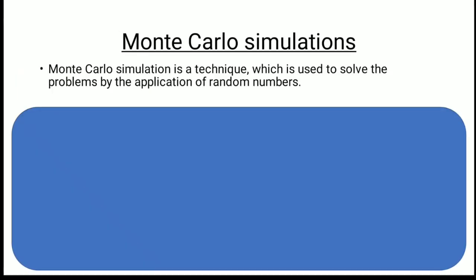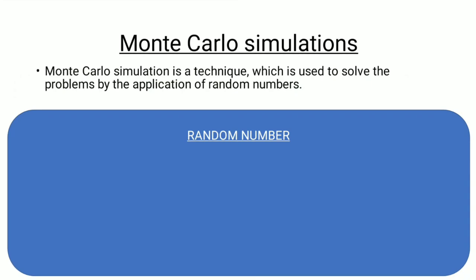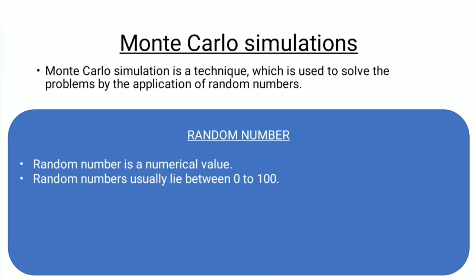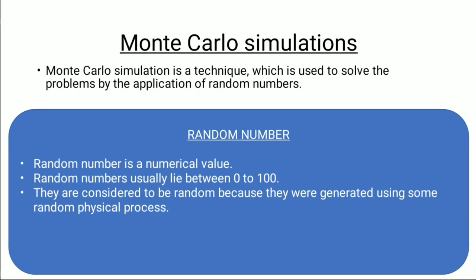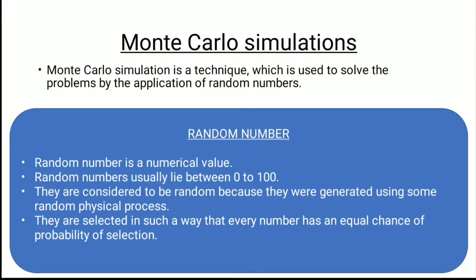Now let us understand Monte Carlo simulation. Monte Carlo simulation is a technique used to solve problems by the application of random numbers. A random number is a numerical value that usually lies between 0 to 100. Random numbers are considered random because they are generated using some random physical process, and every number has an equal probability of being selected.